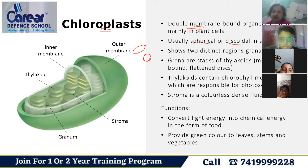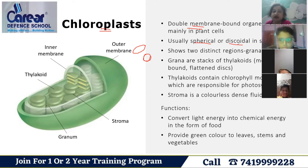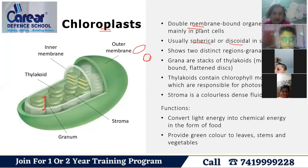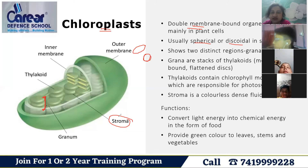Basically, there are two regions present inside the chloroplast: Grana and Stroma. The stacked structures are the grana, and the fluid or liquid present around them is called stroma.